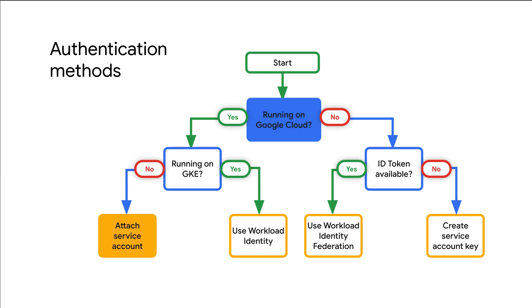For applications running on Google Cloud, use attached service accounts when possible. This enables the application to obtain tokens to access Google Cloud APIs and resources. For applications using GKE, use Workload Identity to attach service accounts to Kubernetes pods.